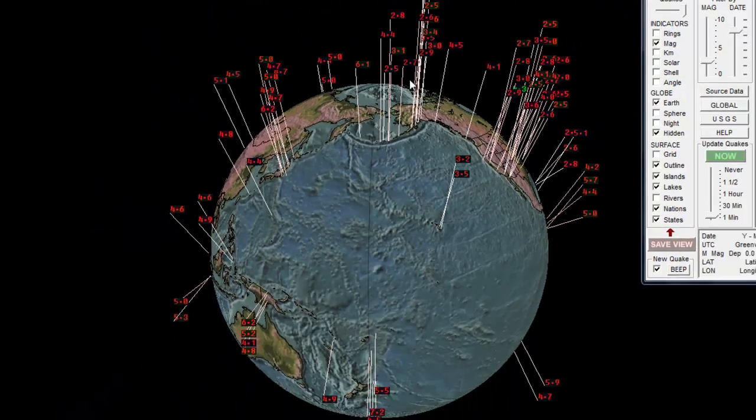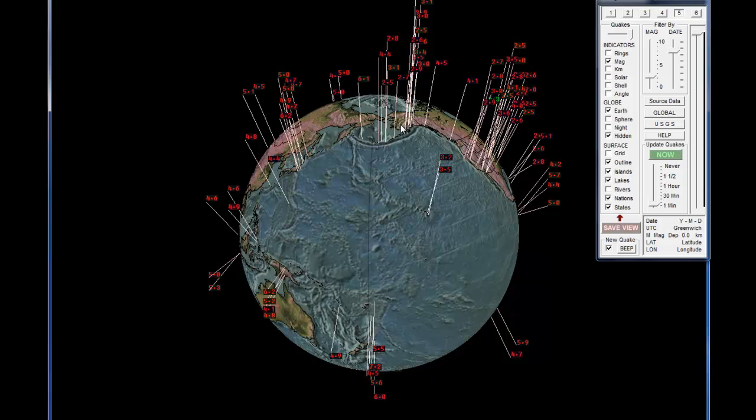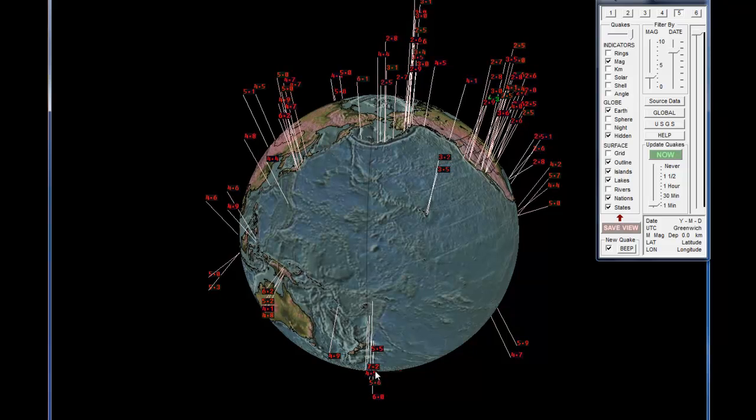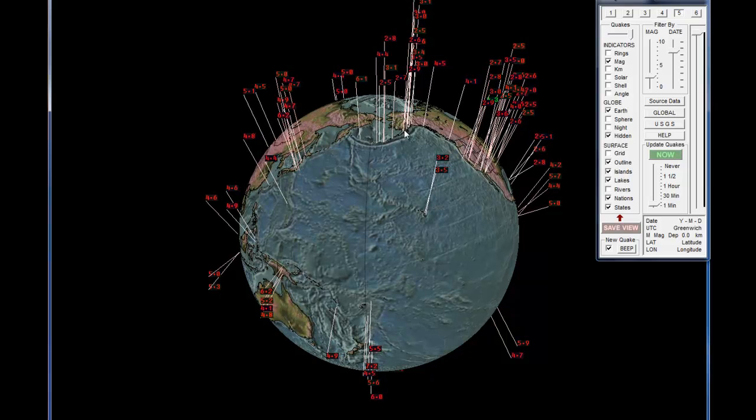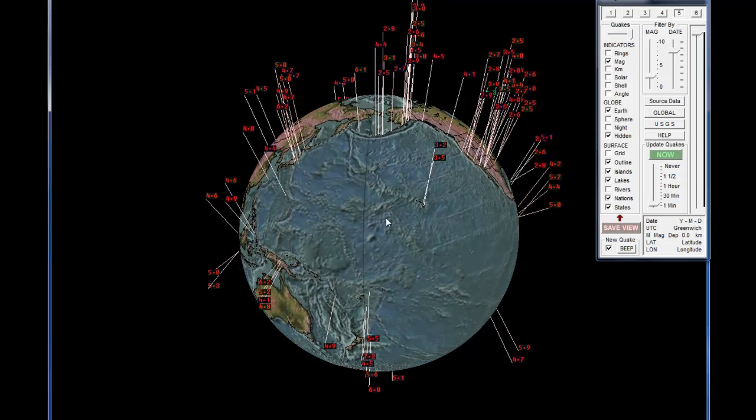This 7.2 is the same size as the one that they had in Alaska about a month ago. So there's your 7.2, and it did fall into 3 to 18 day range just like always. So there you guys have it guys, there's your earthquake update.